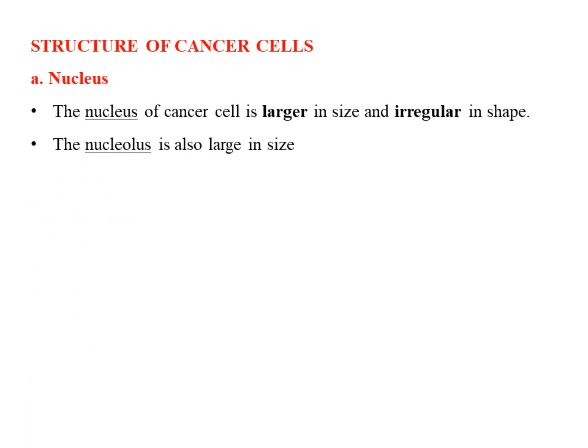Let us see the structure of cancer cells. Morphologically, cancer cells are characterized by a large nucleus which is irregular in shape as well as in size. They also have prominent nucleoli, and their size is enlarged. The enlargement of the nucleus causes the cytoplasm to reduce in size, so the cytoplasm is very scarce in cancer cells compared to normal cells. It may also be intensely colored or pale in appearance.